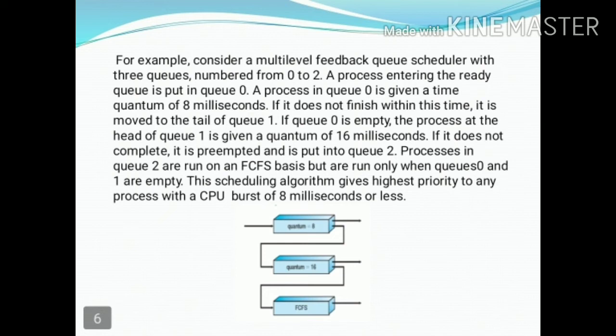When Q0 is empty, the process in Q1 is executed. Q1 has a time slice of 16 milliseconds. If the process completes within 16 milliseconds, execution is complete; otherwise, it is preempted and moved to Q2. Processes in Q2 are run on the basis of FCFS, i.e., first-come-first-served. Q2 runs only when Q0 and Q1 are both empty.